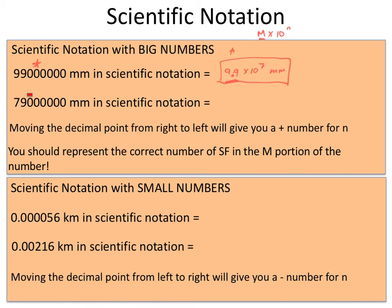In the next example, notice the bar above one of the zeros — that bar indicates that zero is significant. Because it's written in standard form, there's no way to use a decimal point to indicate significance without changing the numerical value, so the line above it marks that zero as significant. The decimal point is again at the end of the number; we move it seven spaces to the left, giving us 7.90 times 10 to the seventh millimeters. There were three significant digits in this number, so there must be three significant digits in the m portion of our scientific notation answer.